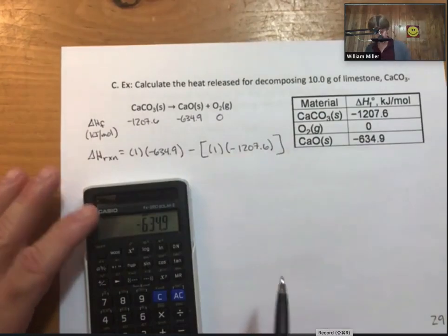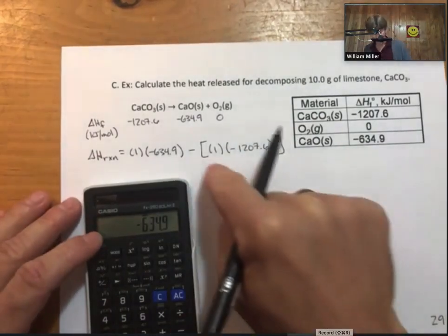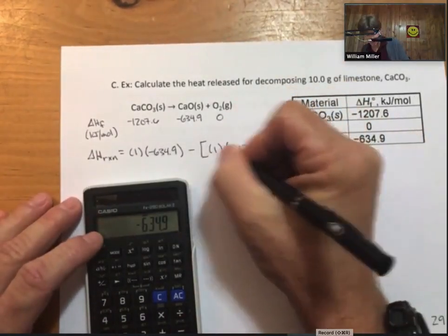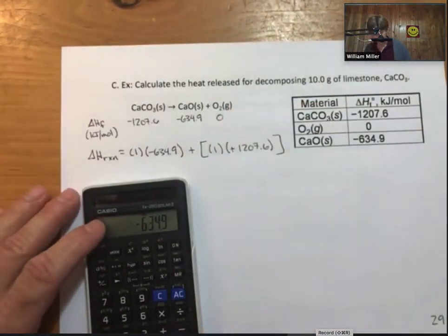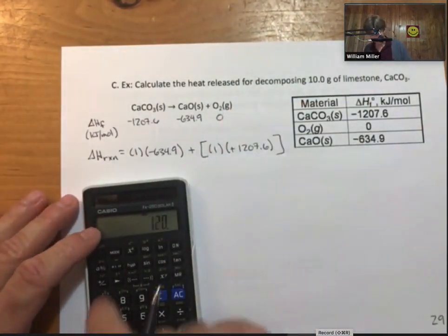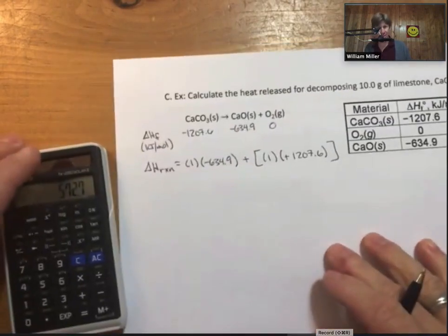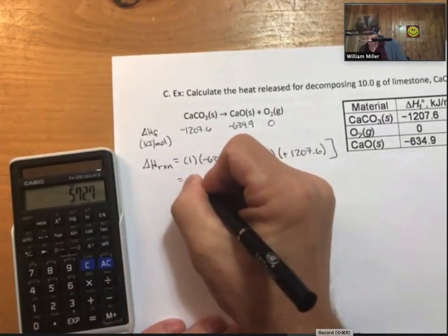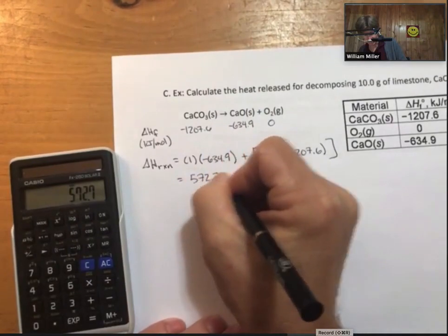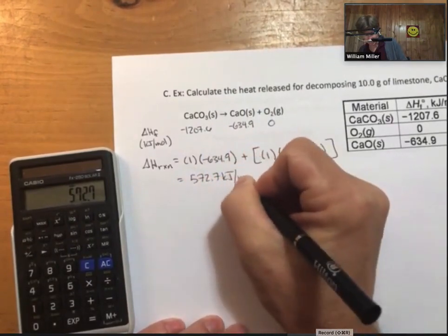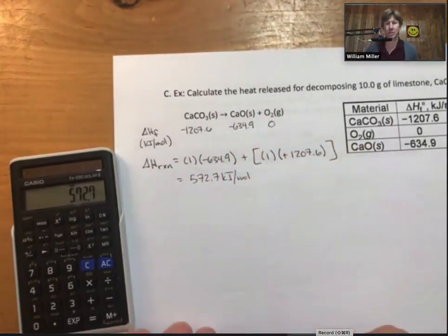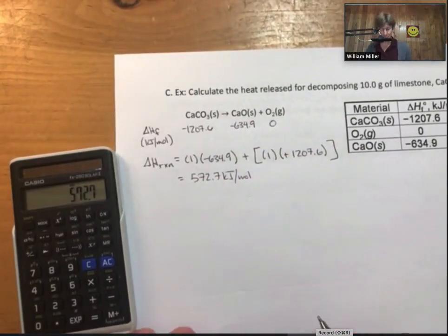We have a minus minus here. That's a plus. 572.7 kilojoules per mole highly endothermic reaction takes a lot of energy to get this to go.